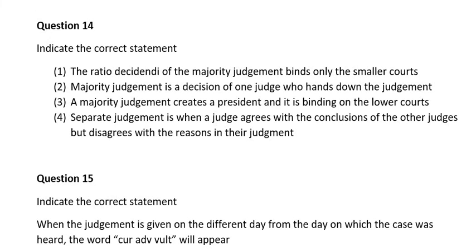Question fourteen. Indicate the correct statement. Number one, the ratio decidendi of the majority judgment binds only the smaller courts; number two, majority judgment is a decision of one judge who hands down the judgment; number three, a majority judgment creates a precedent and is binding on the lower courts; number four, separate judgment is when a judge agrees with the conclusions of the other judges but disagrees with the reasons in their judgment. The correct answer is number four: separate judgment is when a judge agrees with the conclusions of the other judges but disagrees with the reasons in their judgment.